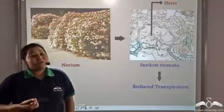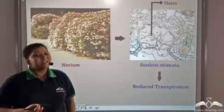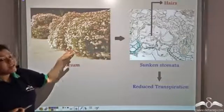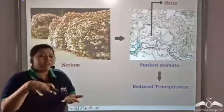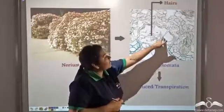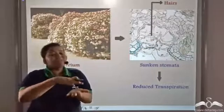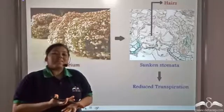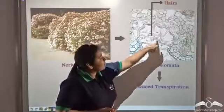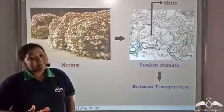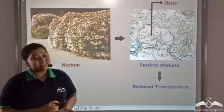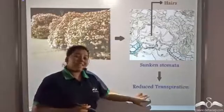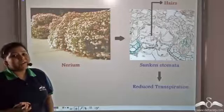Now plants that do not have a cuticle — how do they reduce their rate of transpiration? Well, plants like Nerium have sunken stomata; that is, their stomata are sunken and covered with a lot of hair. These fine fibrous structures are hairs that cover the stomatal opening. These hairs trap the vapour trying to come out of the stomata, creating high humidity in that area. We have already studied that with an increase in humidity the rate of transpiration decreases. So because there is increased humidity in these sunken stomata, the rate of transpiration decreases — and this is how these plants adapt to prevent transpiration.